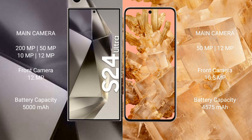The Samsung Galaxy S24 Ultra features a quad rear camera setup: 200MP plus 50MP plus 10MP plus 12MP plus 12MP, and a 12MP front camera. The Google Pixel 8 features a dual rear camera setup: 50MP plus 12MP, and a 10.5MP front camera.